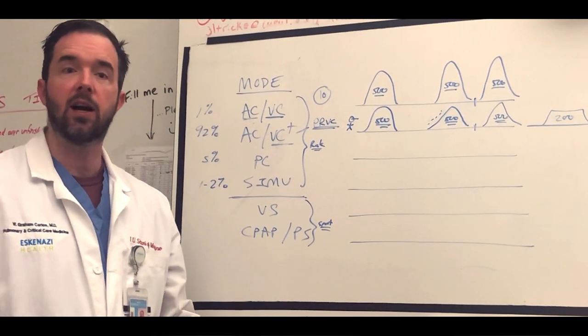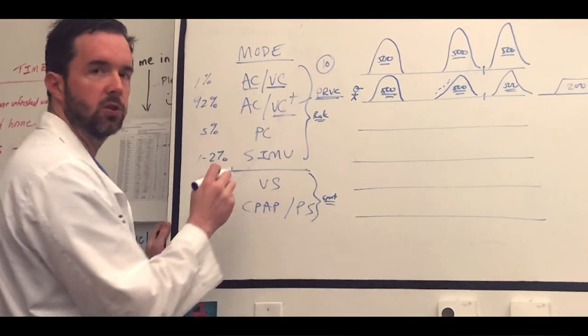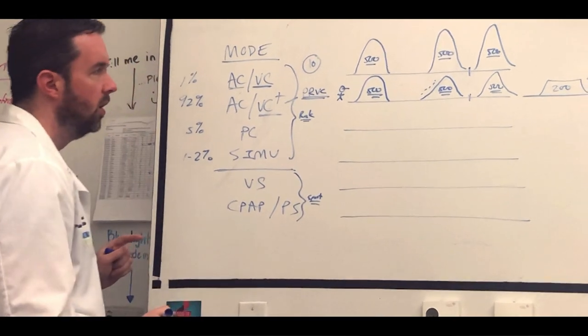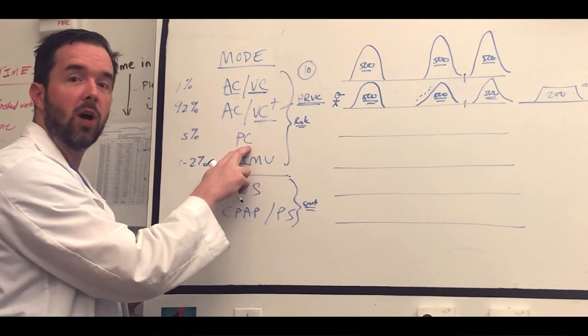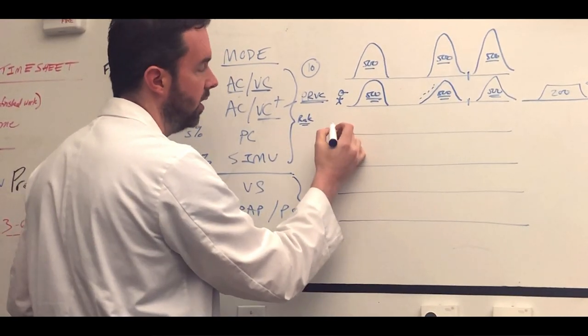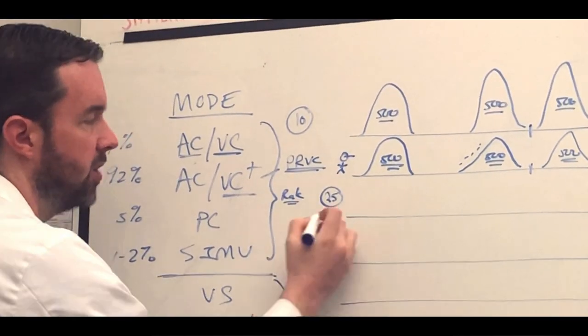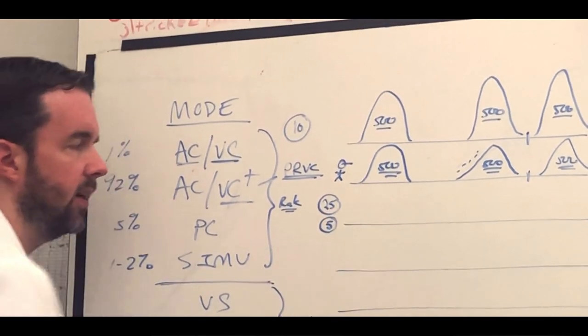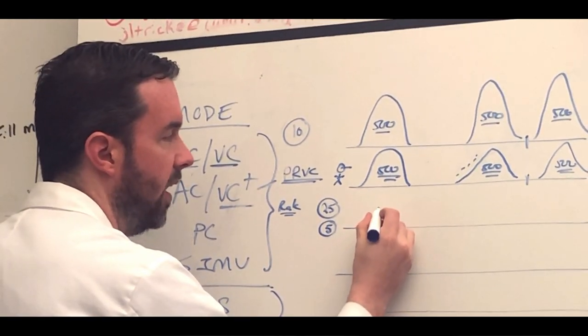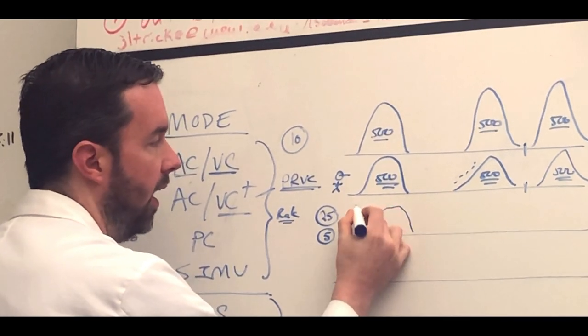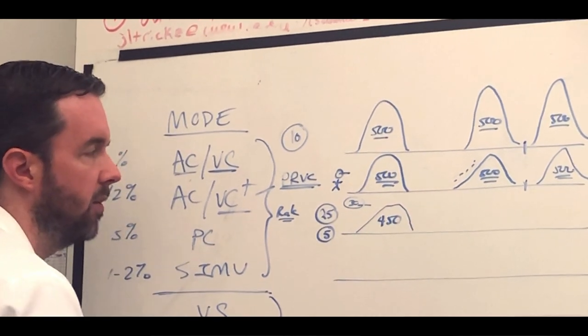The next mode is pressure control. In pressure control we flip the script. So in the first two we were targeting volumes and watching pressure, now we're going to target pressures and watch volumes. In pressure control you set a pressure, let's say it's 25 of inspiratory pressure. That 25 is going to be added on top of the PEEP that's been set, and let's say a typical PEEP is 5. So 25 plus 5 means that when the air is going into the vent, a patient, it's going to stop at 30 of pressure.